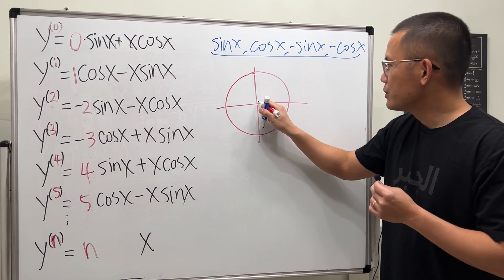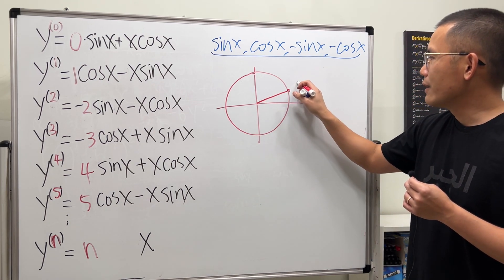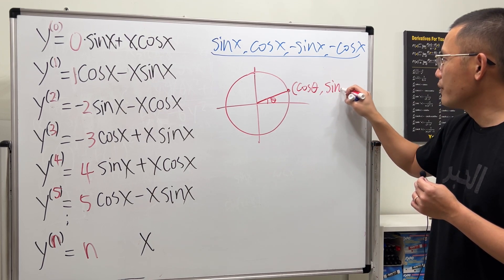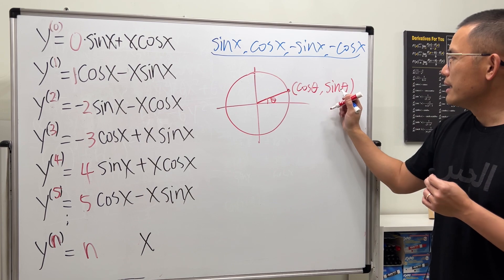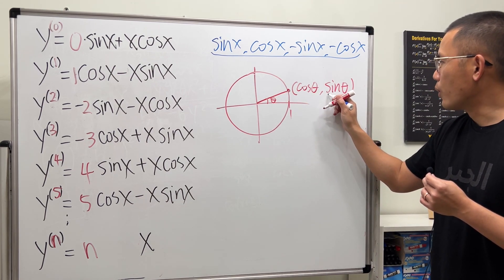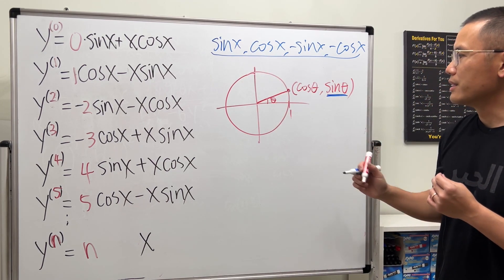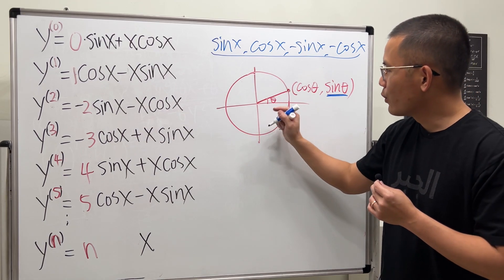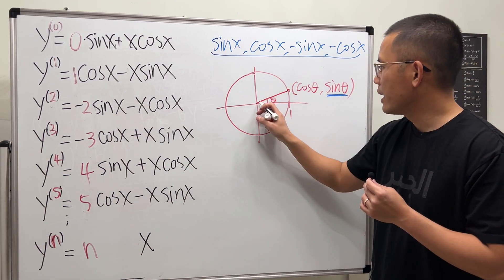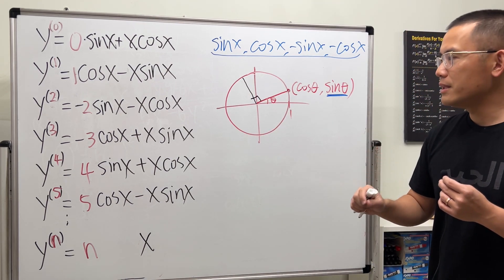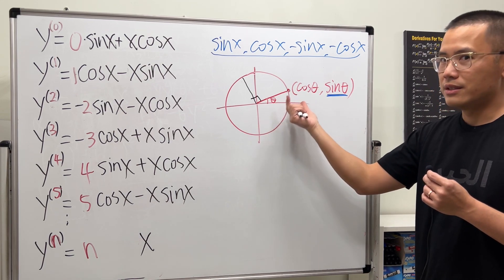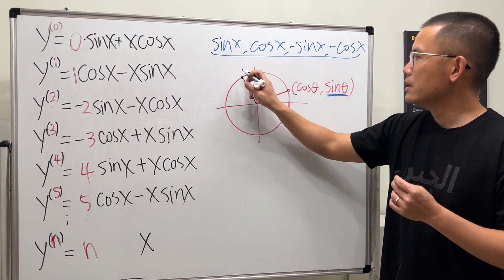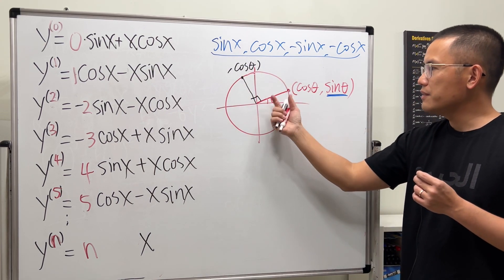On the unit circle, a point has coordinates (cosine θ, sine θ) — the x-value and y-value respectively. If we focus on the y-coordinate we're talking about sine. Now rotate by 90 degrees — pi over two radians — to a new point. The original x-value becomes the new y-value, so cosine θ is still positive.